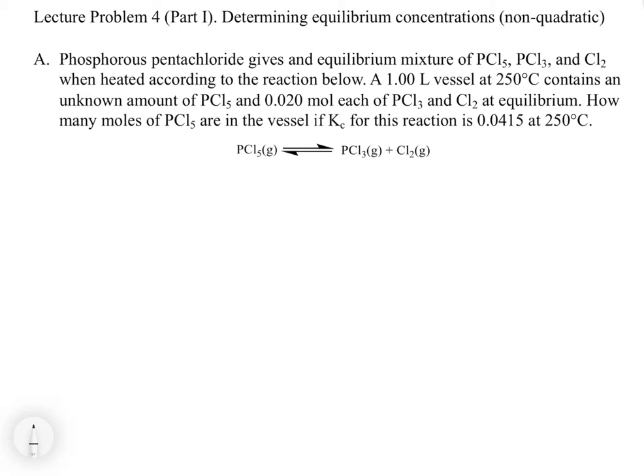We're going to use this nomenclature as we go along. What distinguishes a Type 1 from a Type 2 is the objective: for Type 2, we're going to determine a concentration. You can distinguish one problem from the other — Type 1 is looking for an equilibrium constant, and Type 2 is looking for an equilibrium concentration.